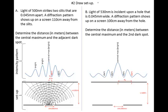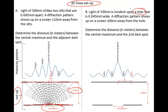Step two: draw the setup. The 500 nanometer light strikes the two slits that are 0.045 millimeters apart. The diffraction pattern shows up on a screen, with the slits 110 centimeters away. For Example B, the hole is 0.045 millimeters wide, and the screen is 100 centimeters away.